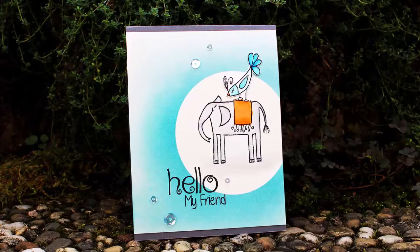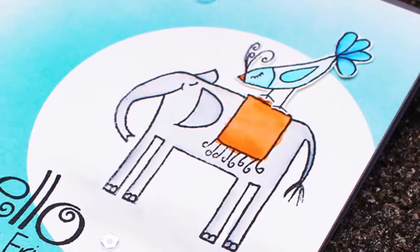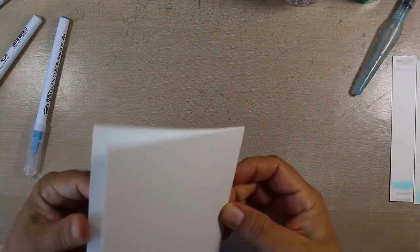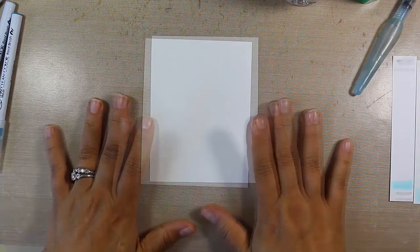Hi there, it's Ingrid. Welcome back. This week we're going to work on a fun watercolor project using the Whimsical Friends stamp set to create this cool project using the Zig Clean Color Real Brush markers. To get started, I have a piece of Arches watercolor paper that I've cut down to a card front.